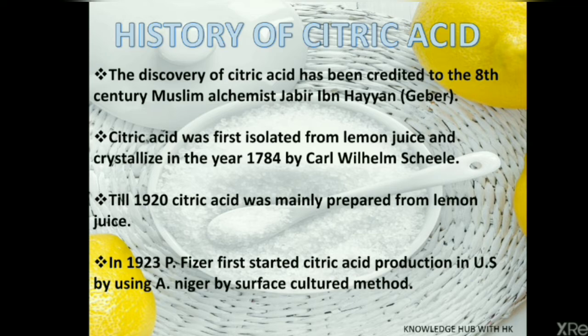Since 1893, scientists have known that citric acid can be produced by filamentous fungi. In 1923, P. Fisher first started citric acid production in the United States by using Aspergillus niger by surface culture method. The fermentation using big-watt fermenters began in the 1930s. Today, about 99% of all citric acid comes from microbial fermentation.